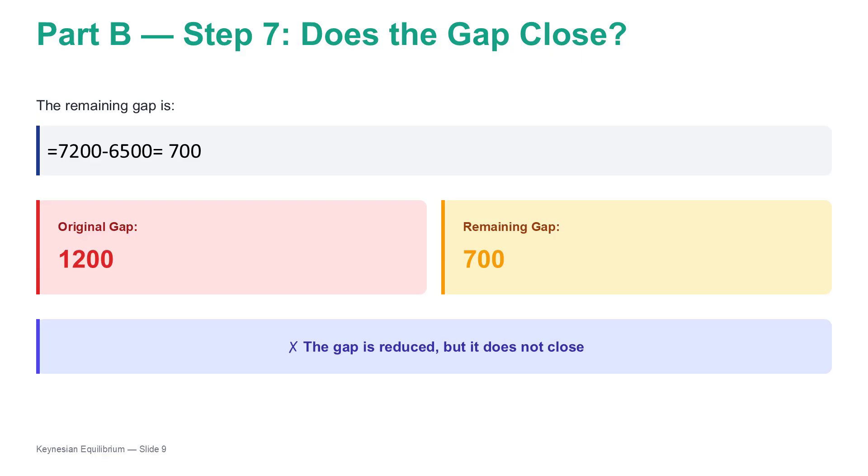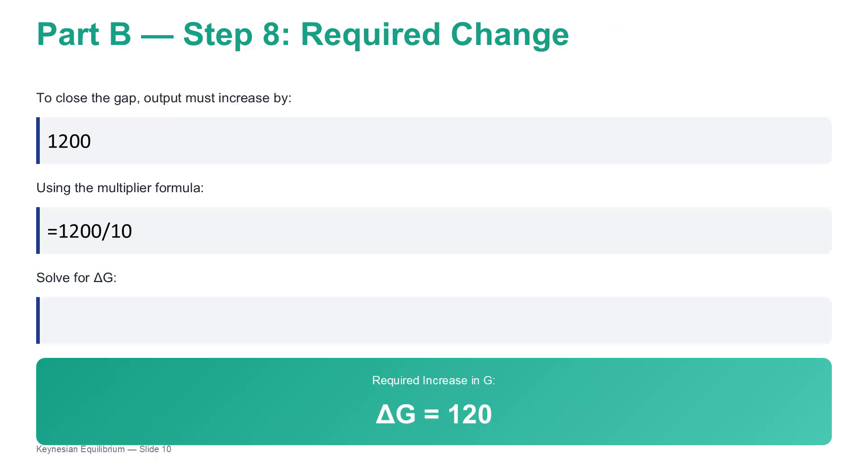So we've seen how the mechanism works. Now we need to figure out the exact policy prescription to hit that 7,200 target on the nose. Exactly. We know the total change in output we need, delta Y, is that original gap of 1,200. And we know the multiplier is 10, so you can just reverse engineer the formula. If delta Y equals K times delta G, then delta G must equal delta Y divided by K. So that's 1,200 divided by 10, which gives us 120. The required increase in government spending is exactly 120 million shekels. It's so clean when you lay it out like that. 120 shekel injection leverages up 10 times to create the 1,200 shekels of new output we need. And that brings the economy from 6,000 right up to the full employment target of 7,200. It's a perfect illustration of the power of this model.